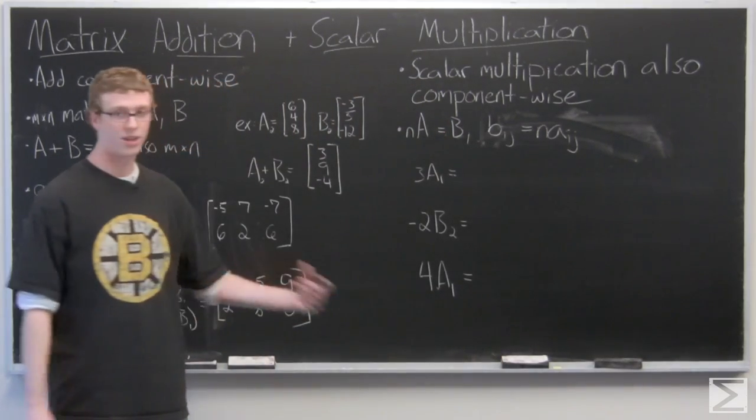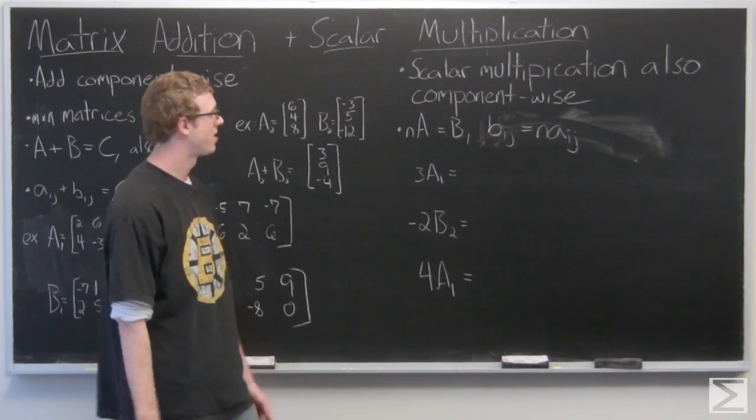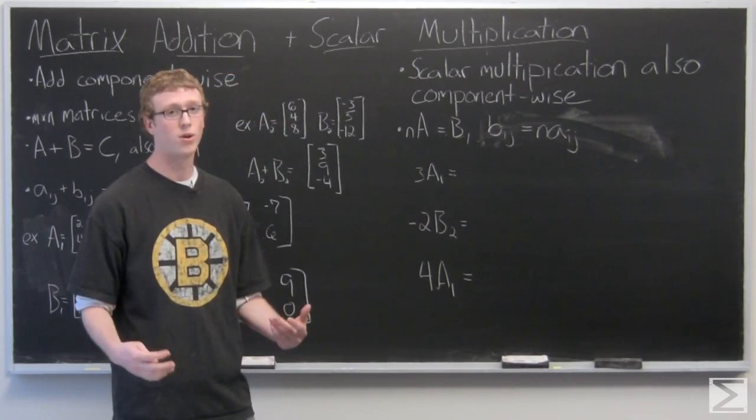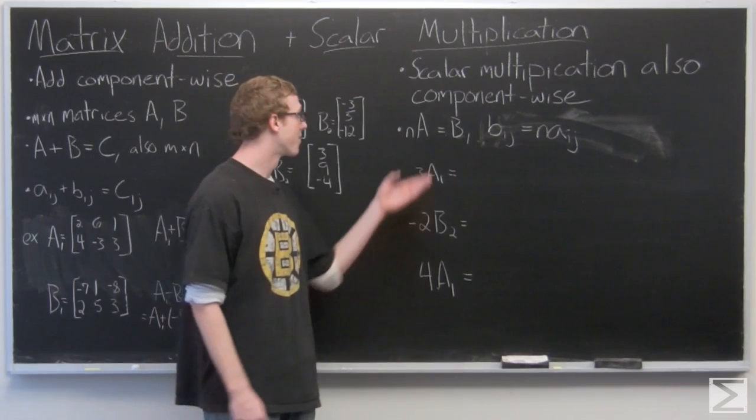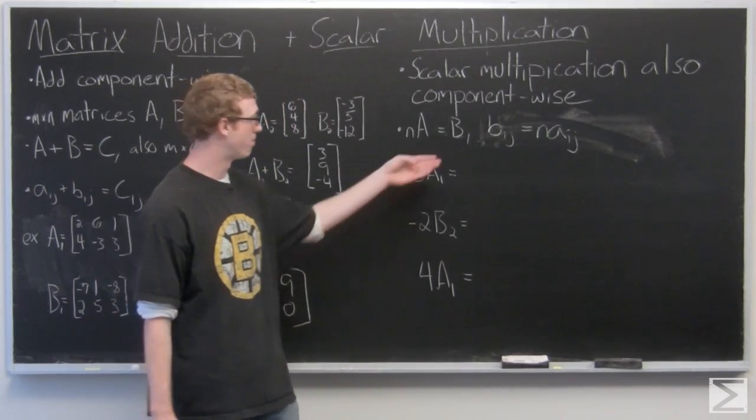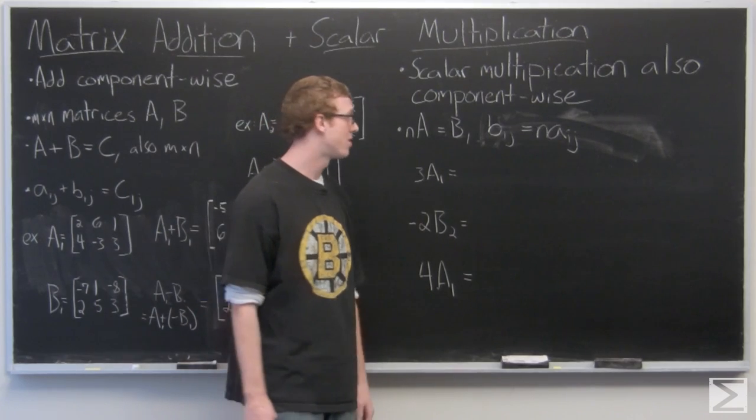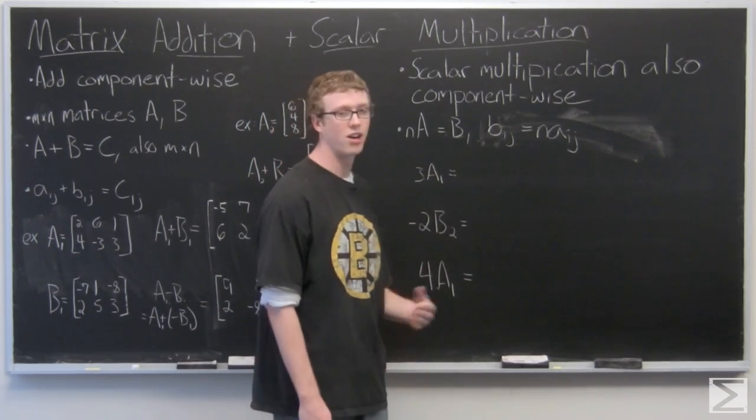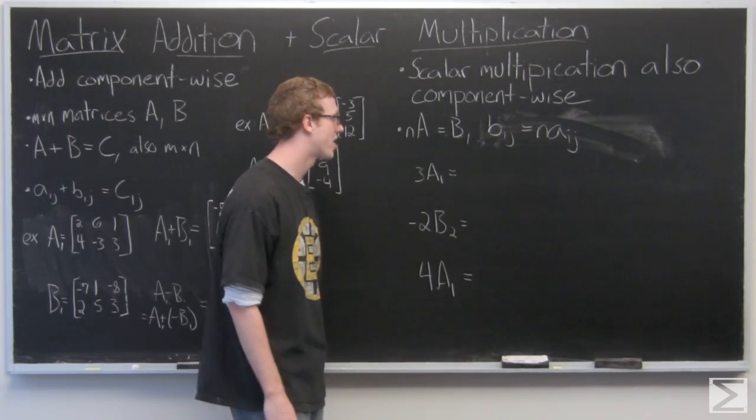So now we're going to take a look at scalar multiplication. Again, very similar to vector scalar multiplication. You do it component-wise. So we have N times A, where A is an M by N matrix equals B, which is also an M by N matrix. And the entries of B, BIJ, are going to be just N times each entry, AIJ.